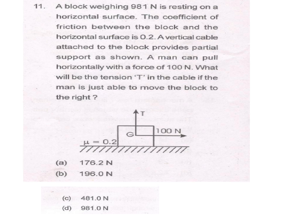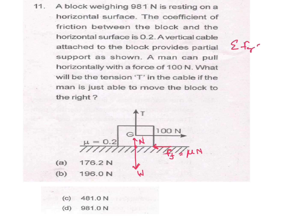The block will move to the right, so the frictional force will act in the opposite direction. The frictional force is Mu into N, where N is the normal reaction. In the vertical direction, weight W acts downward and normal reaction N acts upward. For equilibrium of vertical forces, Fy equal to 0, so T plus N equal to W.